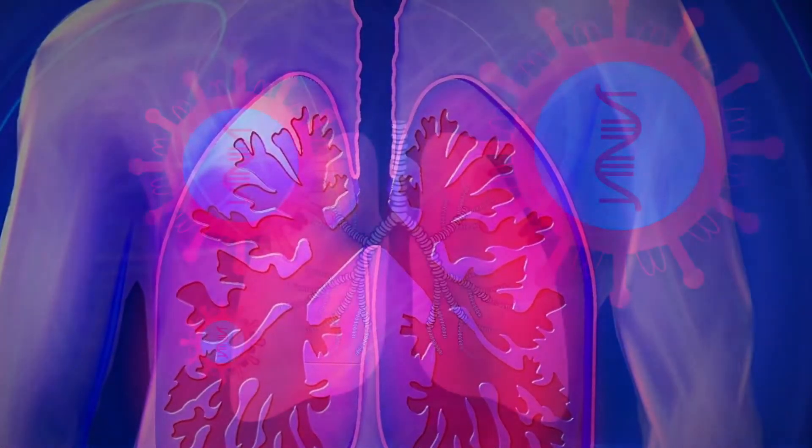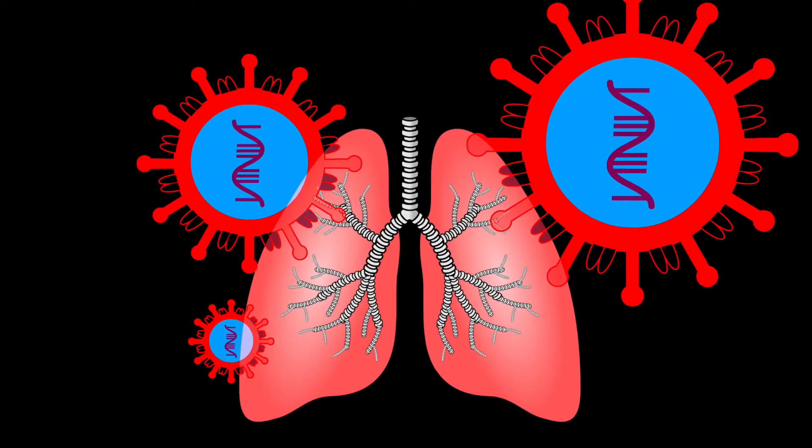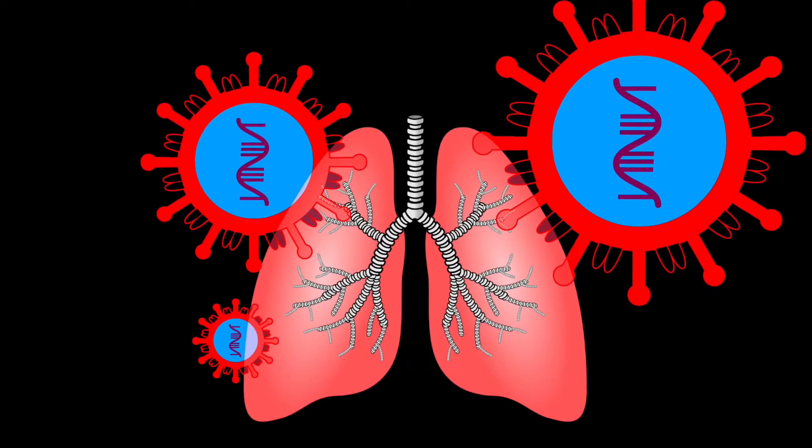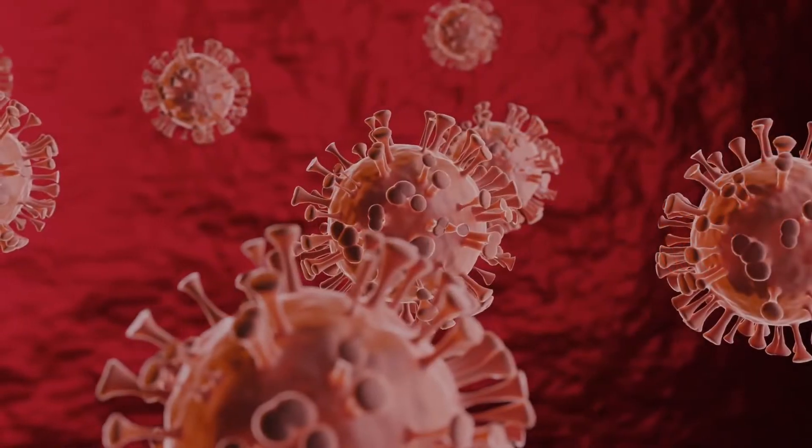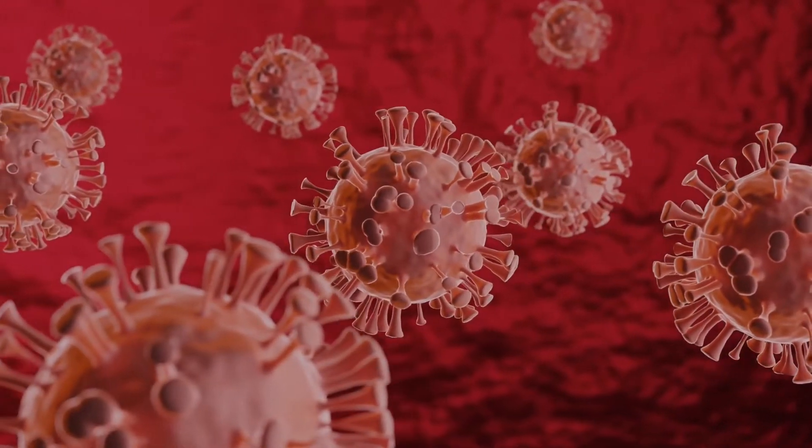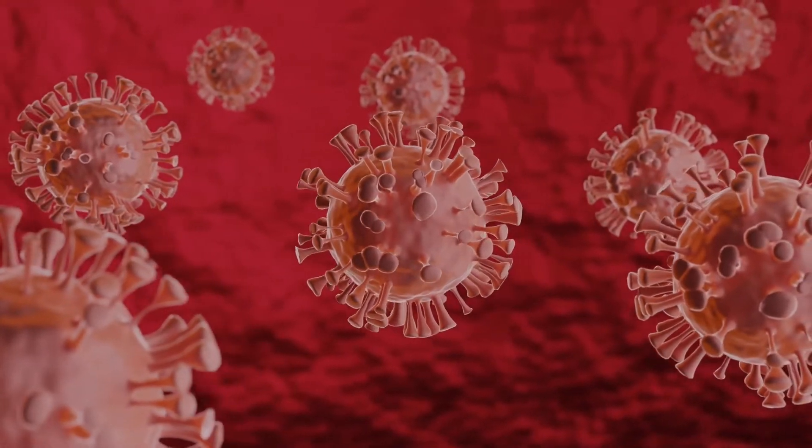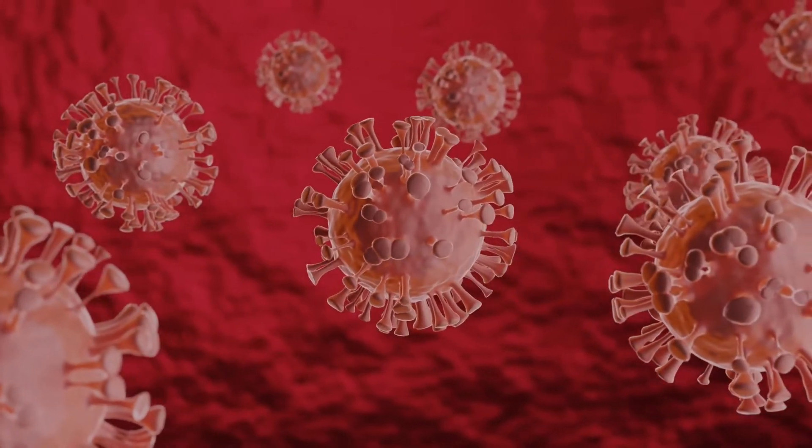Once inside your body, the virus comes in contact with your healthy cells and uses its spikes to gain entry. The spikes of the coronavirus attach to receptors on the healthy cell membrane and enter into your cell.